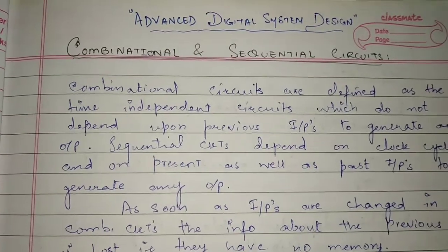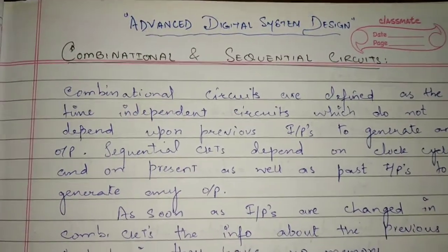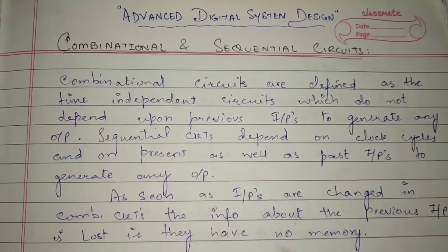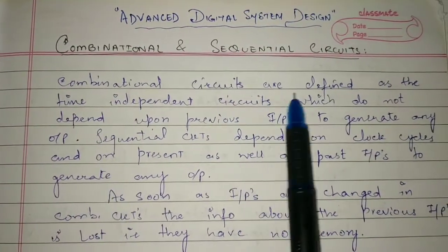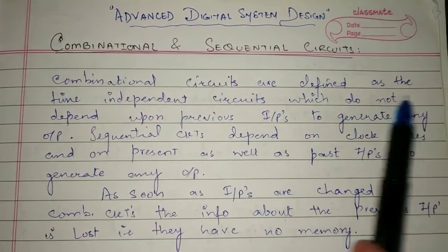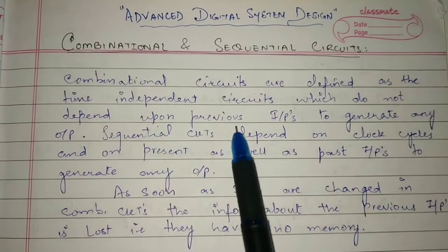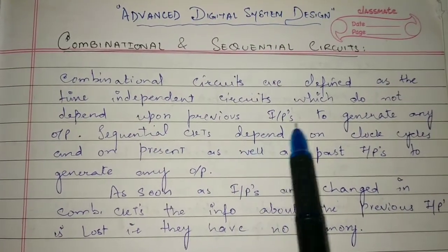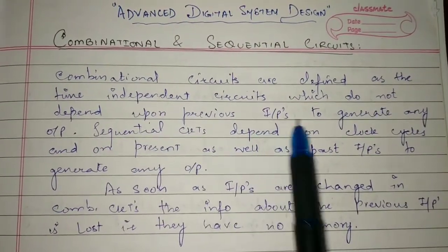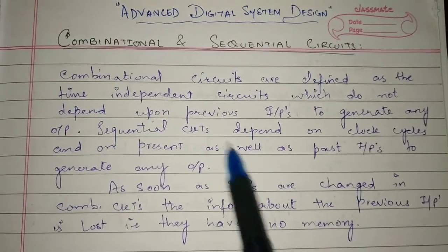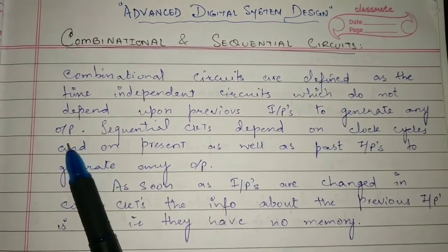Let's begin with combinational and sequential circuits — what these actually are. Combinational circuits are defined as time-independent circuits. They do not depend upon previous inputs to generate any output.